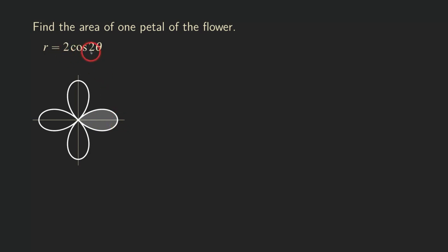First, we need to plug in some theta values to see what's going on. When theta is equal to 0, what happens? We have r is equal to 2 cosine of 2 times 0. Cosine of 0 is 1, so you're going to get r equals 2. That's at this point right here because the angle is at 0 and r is equal to 2, so that's 2 units away from the origin. This is when theta is equal to 0.